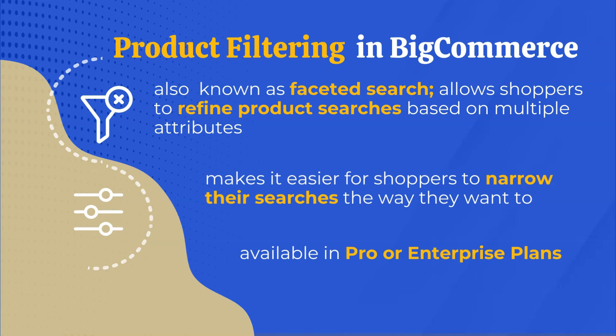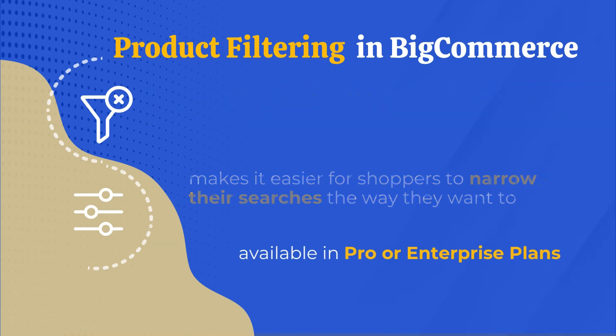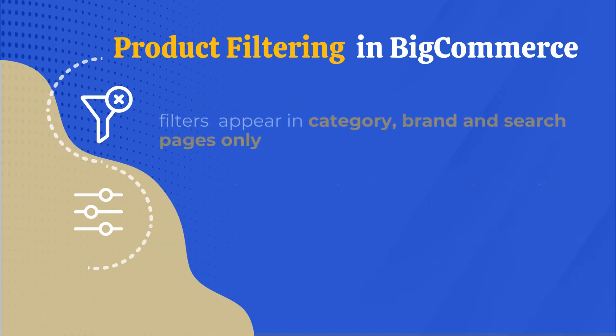Product filtering is one of the most useful out-of-the-box features of BigCommerce, also known as faceted search. It allows shoppers to refine product searches based on multiple attributes and makes it easier for shoppers to narrow their searches the way they want. Take note: product filtering is only available on Pro or Enterprise plans.